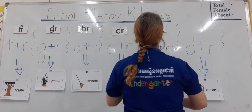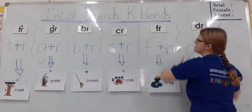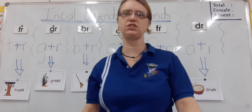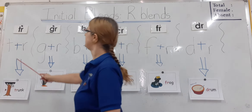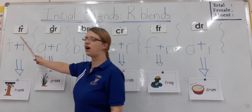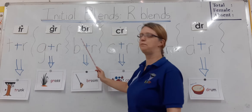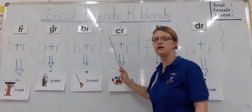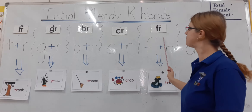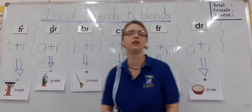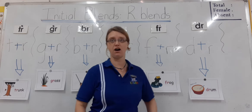So those are the six blends we're going to look at: TR, GR, BR, CR, FR, and the last one DR.